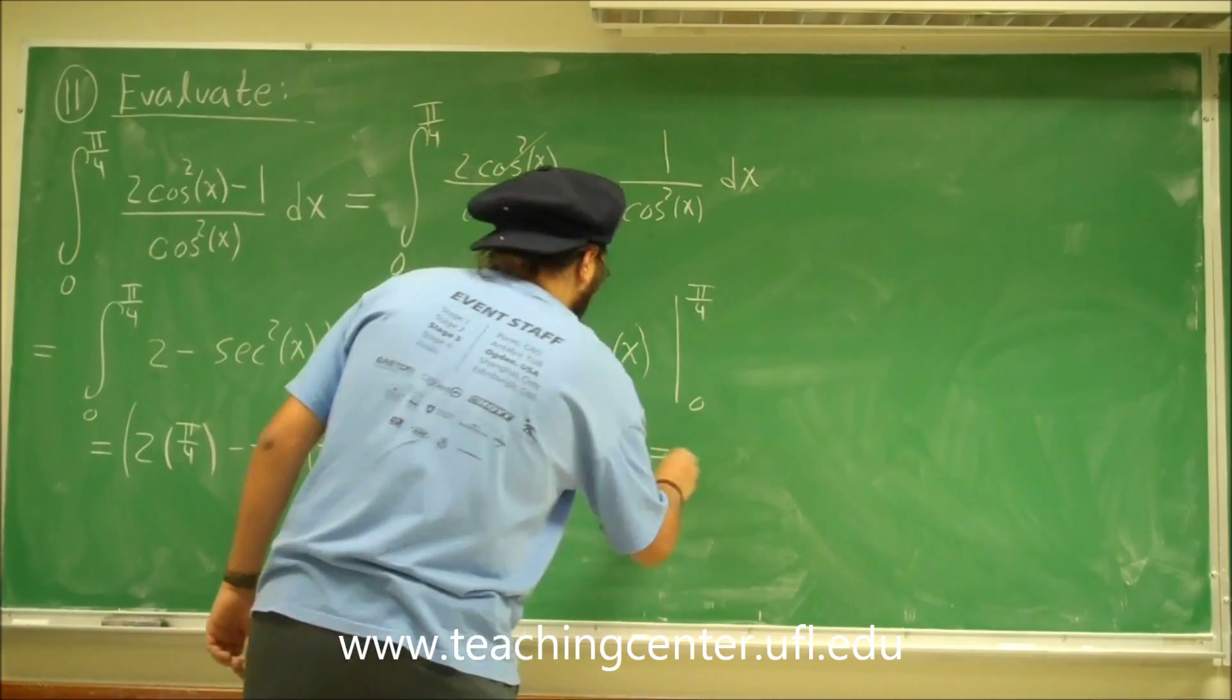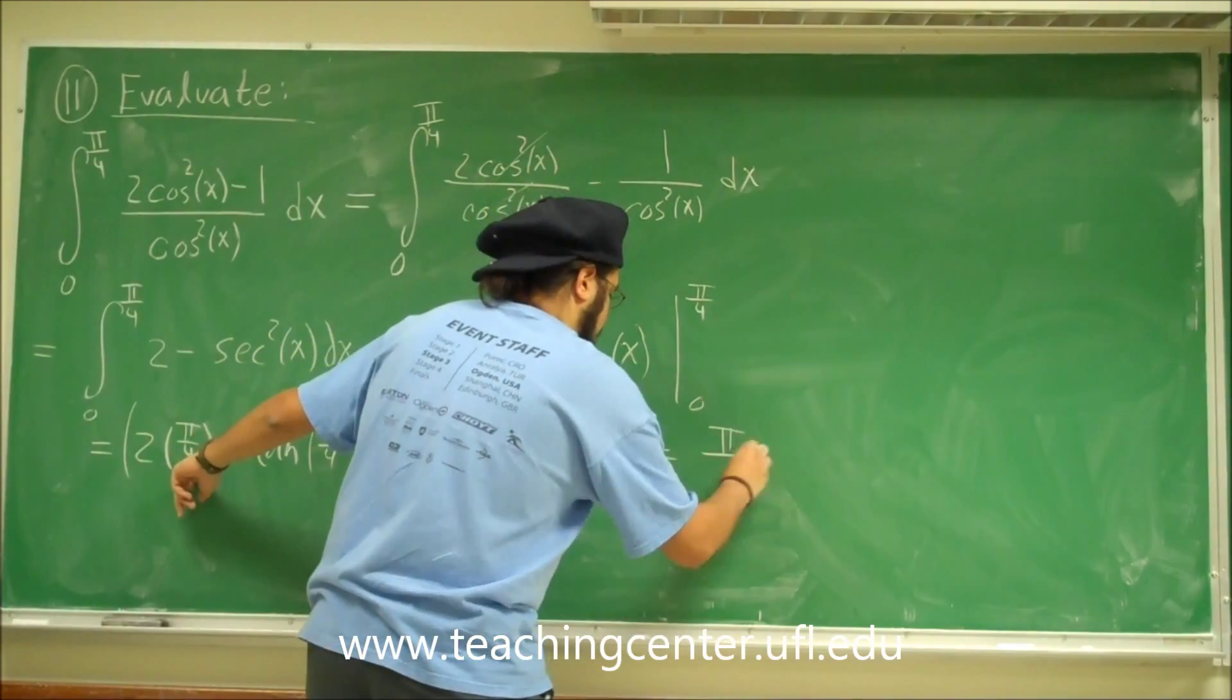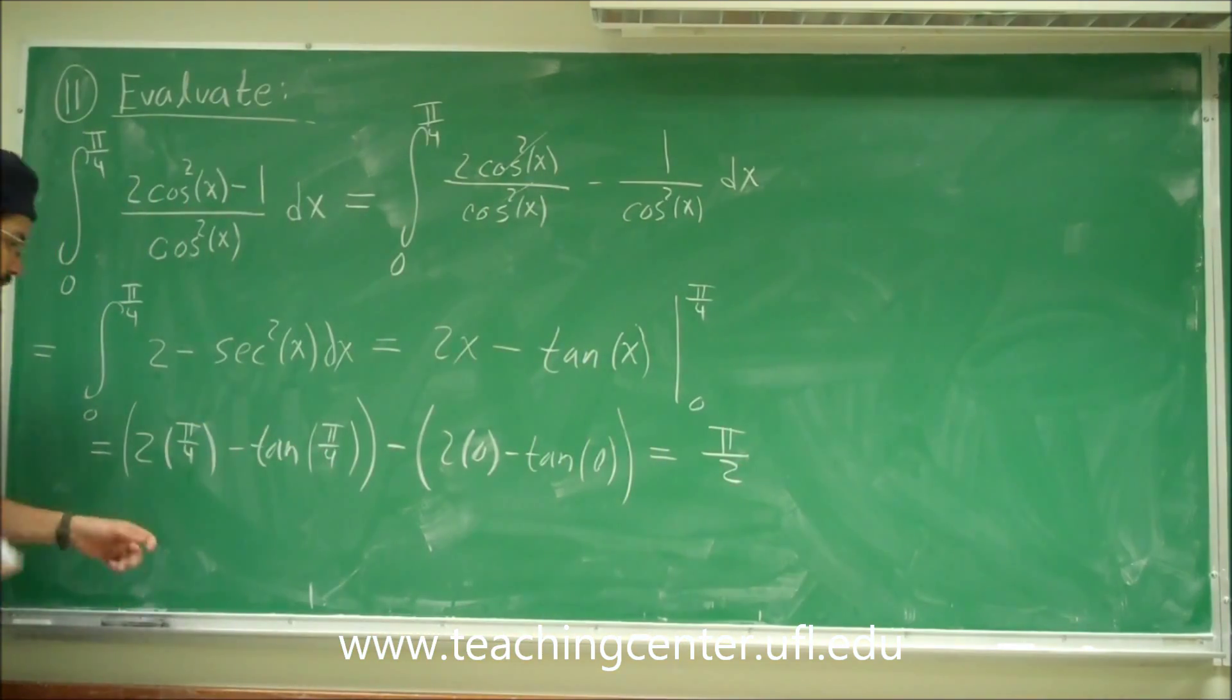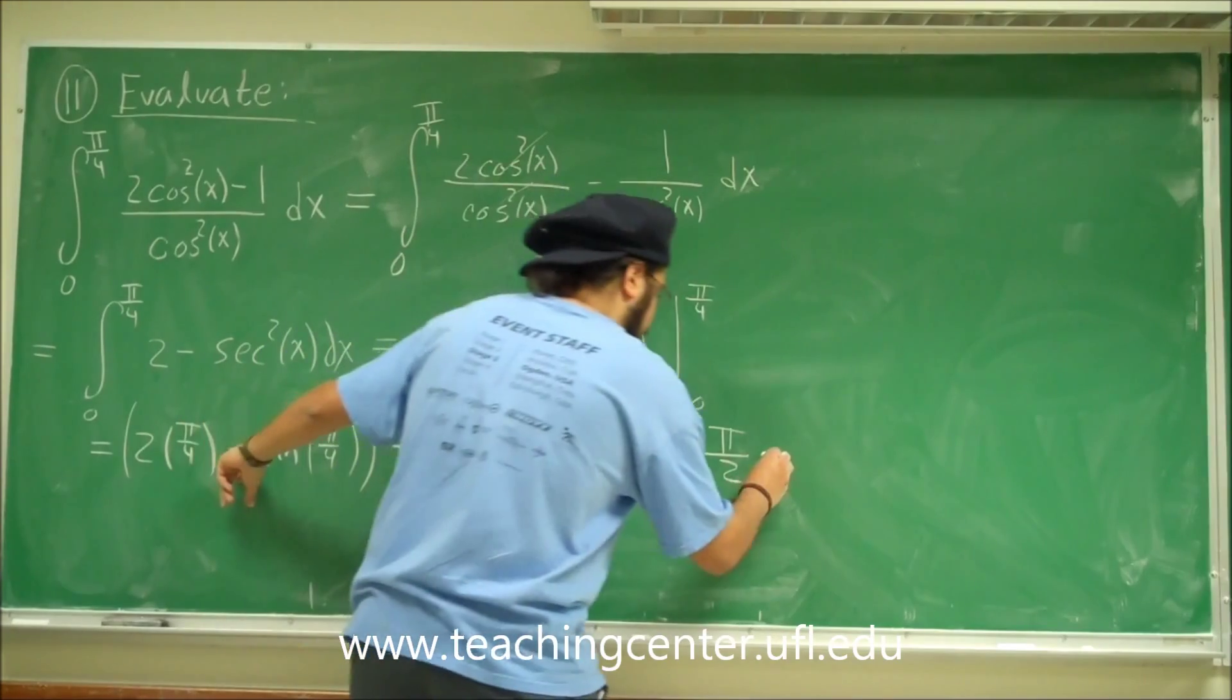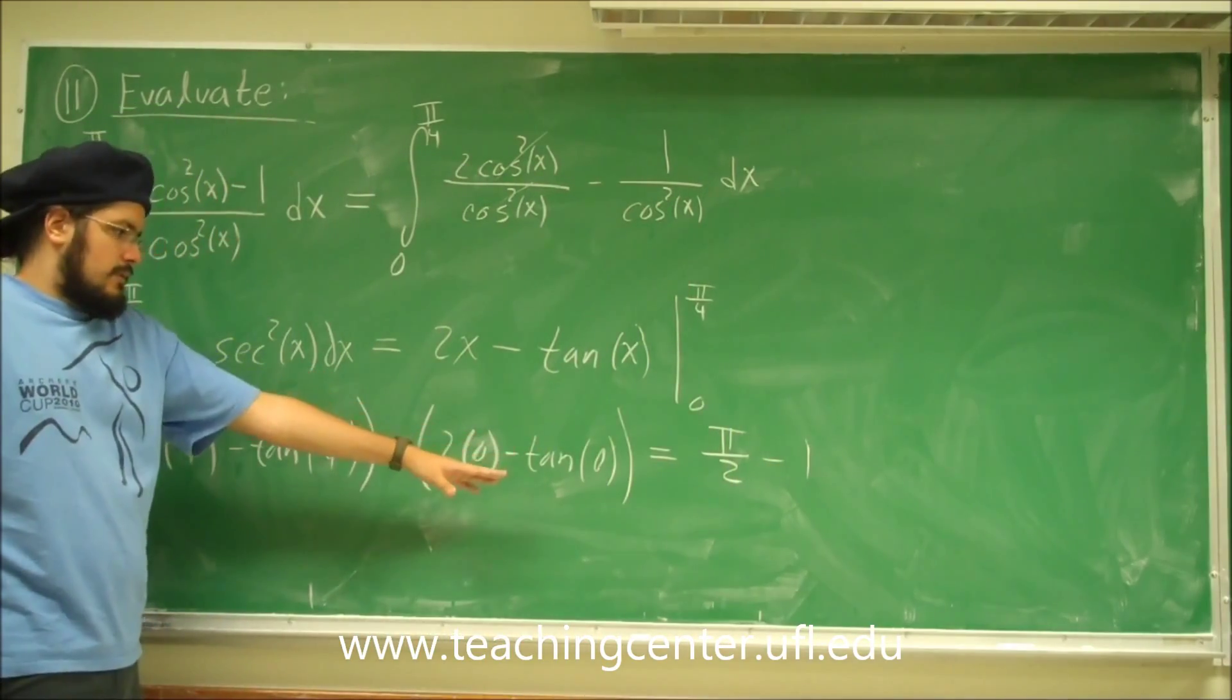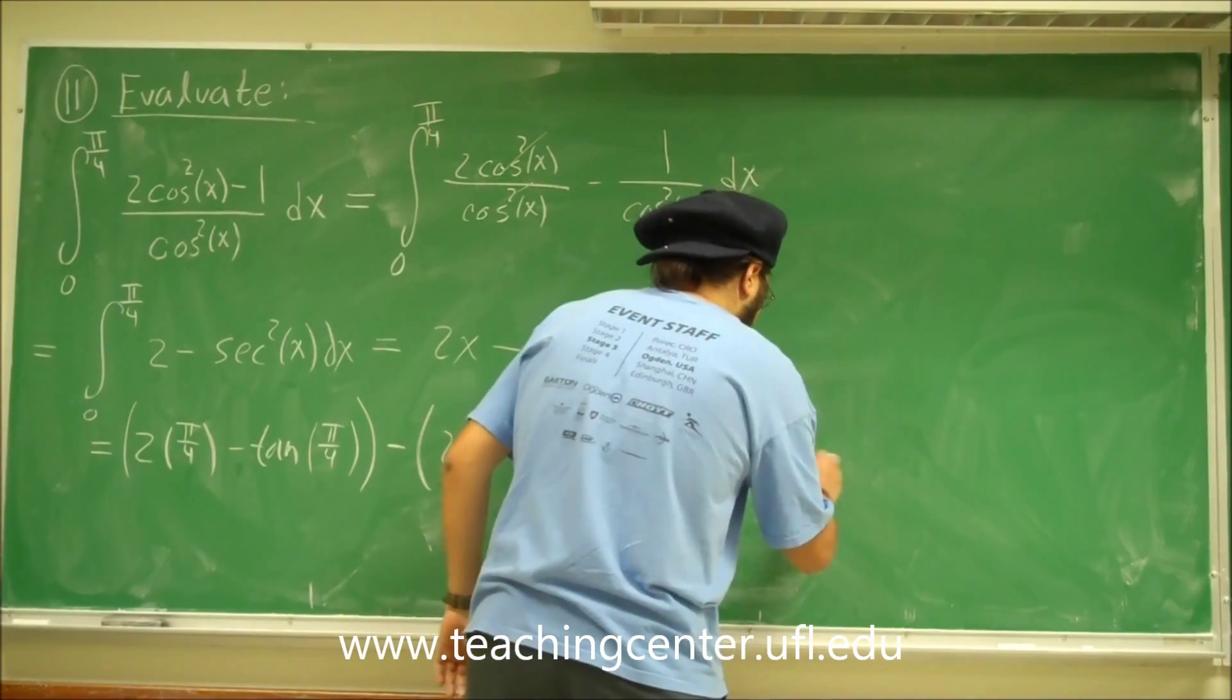So what do we get here? Let's go ahead with this first. 2 times pi over 4. That's pi halves. Okay. Tangent of pi over 4. We know that's 1. That's minus 1. 2 times 0 is 0. And tangent of 0 is 0. So we don't have to worry about that.